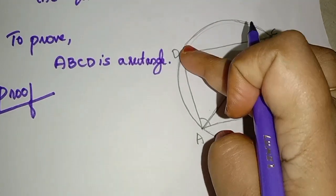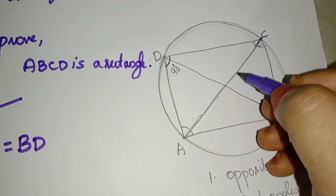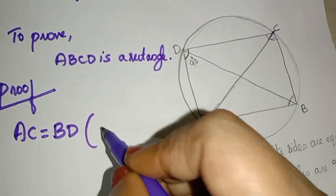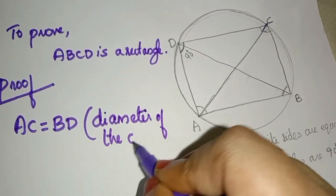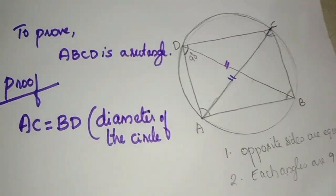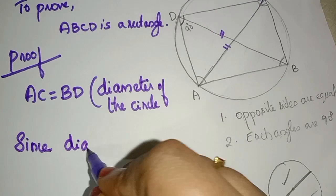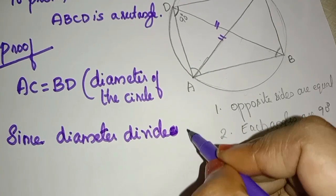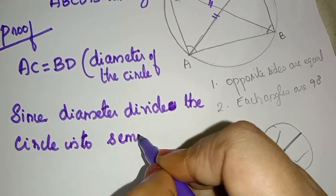AC is equal to BD, because AC and BD are both diameters of the circle and are equal. Since the diameter divides the circle into semicircles,